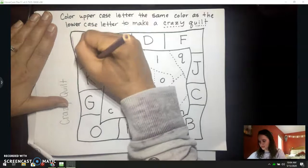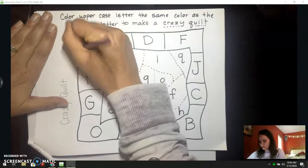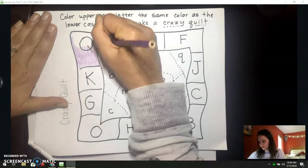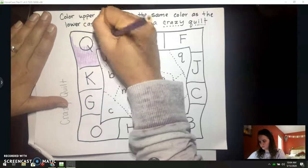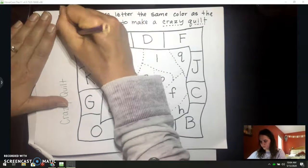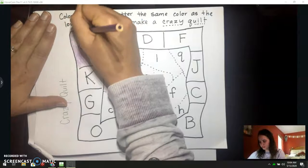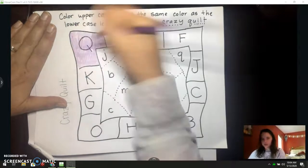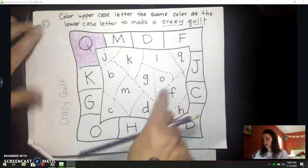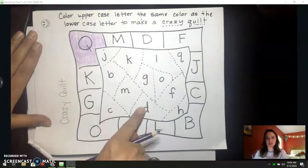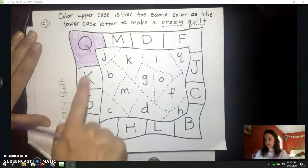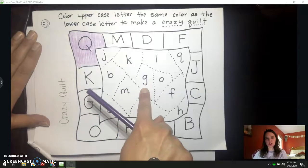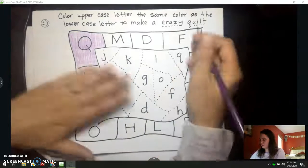Now, I'm trying to stay in the lines. But my coloring doesn't have to be perfect. Remember, there's no such thing as perfect. Perfect is make-believe. Perfect isn't real. Even professional artists aren't perfect. So, now that my Q is that color, I have to find the lowercase Q in the middle that matches. This has a tail, but we just talked about this letter. This is a J. This is the tricky one. That's a G. Here's my Q up here.